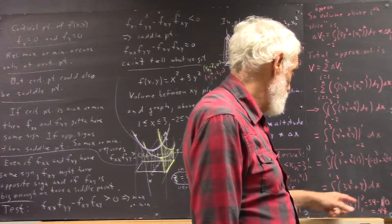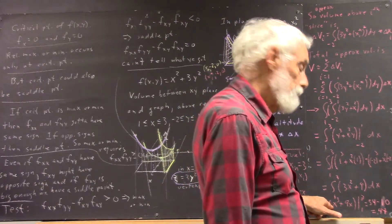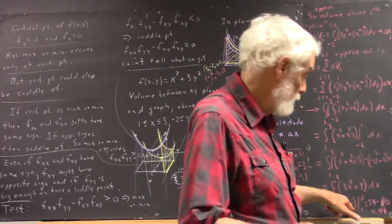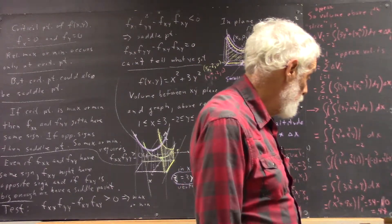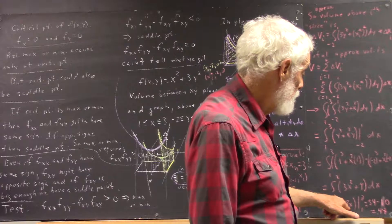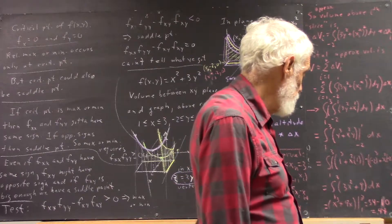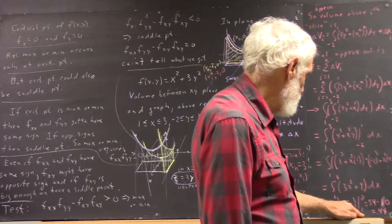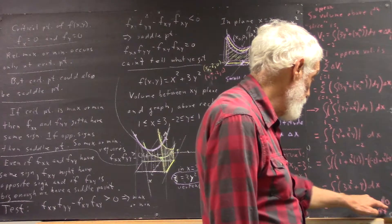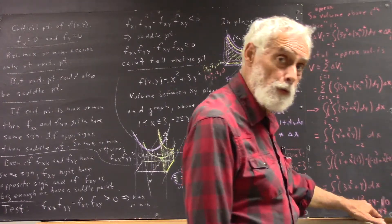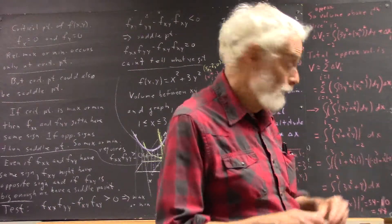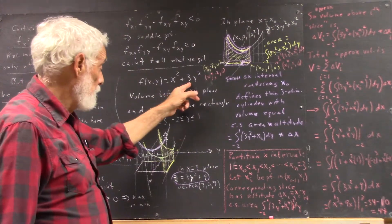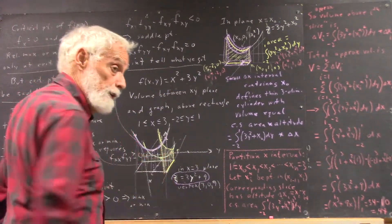So when x is 3, we get 3 cubed, which is 27. 9 times 3 is also 27, coincidentally. I didn't plan it that way, but it happens. So 27, 27 is 54. And then we subtract what we get when we evaluate this at 1. And that's just going to be 1 plus 9, or 10. And we end up with 44, and that's the volume. And that's the exact volume of the region under this paraboloid above this rectangle.